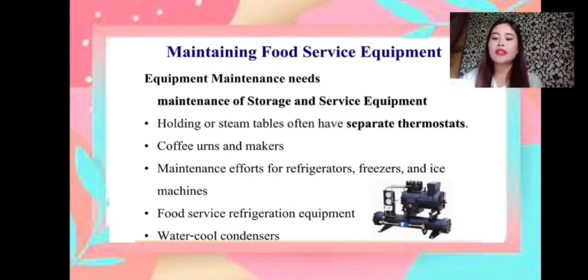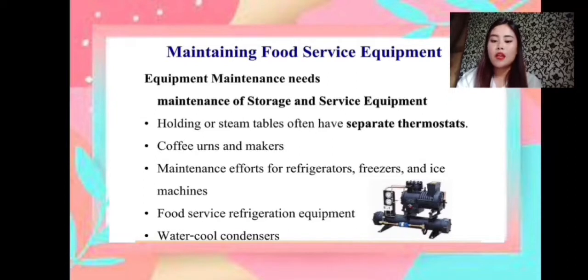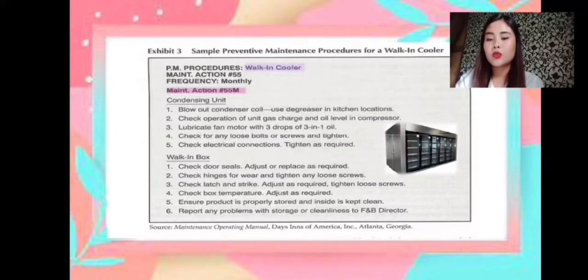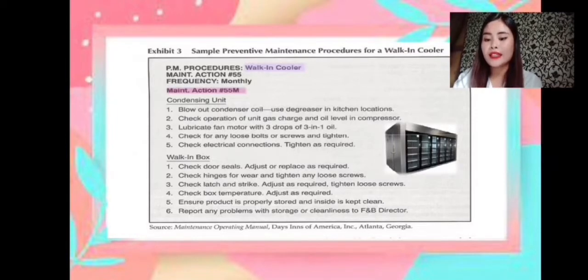Maintaining food service equipment — equipment maintenance needs for storage and service equipment: holding or steam tables often have separate thermostats, coffee urns and makers, maintenance efforts for refrigerators, freezers and ice machines, food service refrigeration equipment, and water-cooled condensers. Here is a sample preventive maintenance procedure for a walk-in cooler. Condensing unit: 1. Blow out condenser coil and use degreaser in kitchen locations. 2. Check operation of unit, gas charge, and oil level in compressor. 3. Lubricate fan motor with 3 drops of 3-in-1 oil. 4. Check for any loose bolts or screws and tighten. 5. Check electrical connections and tighten as required.